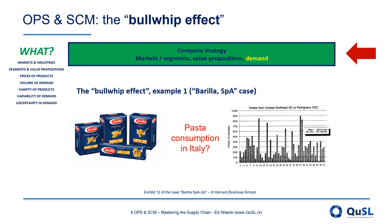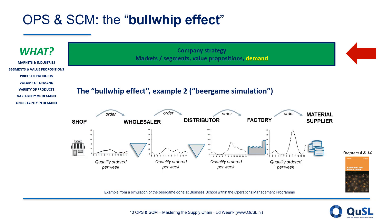Research by Stanford professor Hao Li in the 1990s showed a similar case for diapers from the brand Procter & Gamble. The famous beer game board simulation for use in class also demonstrates the same results: small swings of demand at the end of the chain lead to wide swings of demand at the beginning.